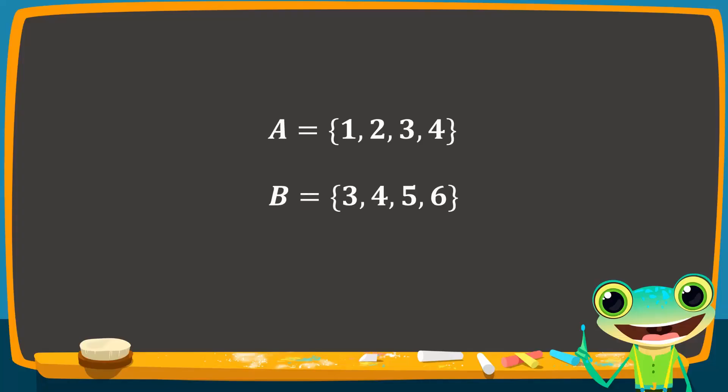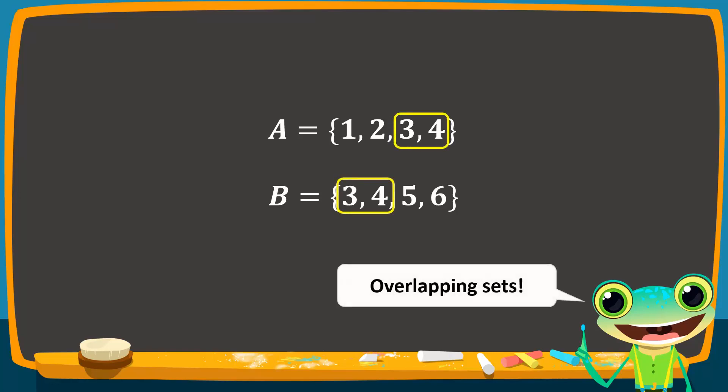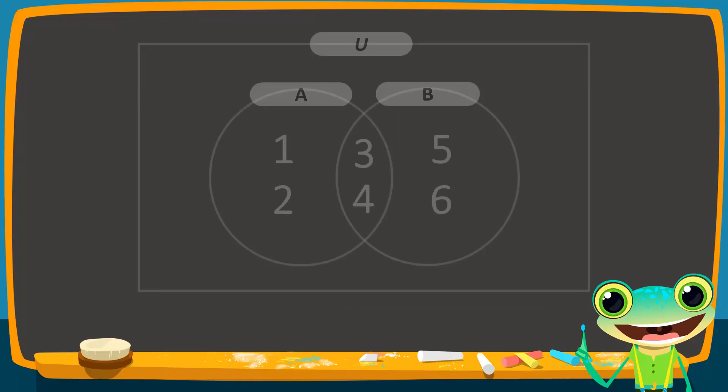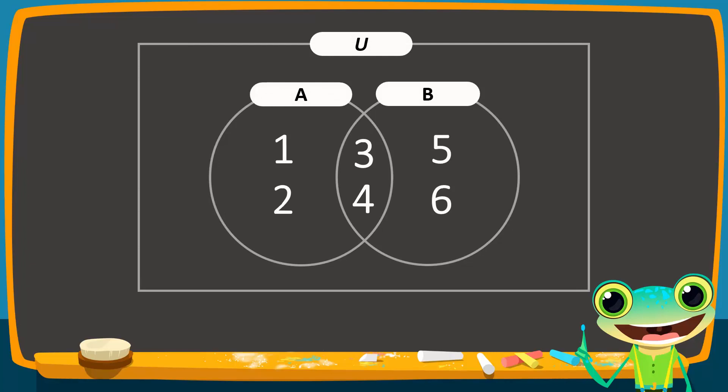Consider these two sets. Set A contains the numbers 1, 2, 3, and 4, while set B contains the numbers 3, 4, 5, and 6. Since 3 and 4 are common to both sets, these sets are overlapping. Therefore, on a Venn diagram, the circles overlap partially. The common elements will lie within the overlapping region.